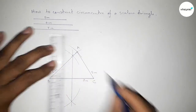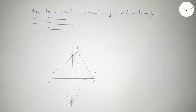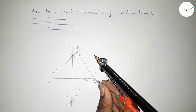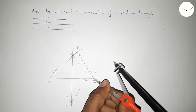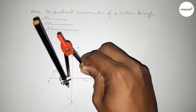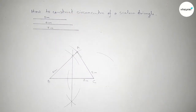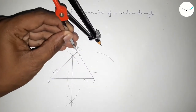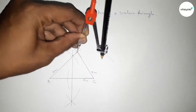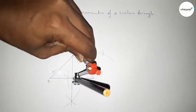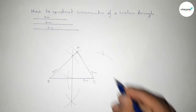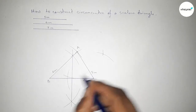Now joining this bisector. Next, bisecting the line AC: putting the compass at one end, taking greater than half of AC, and drawing an arc. With the same length, cutting arcs on both sides so both curves intersect at two points. Now joining this bisector.